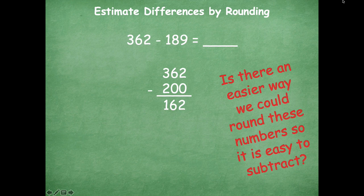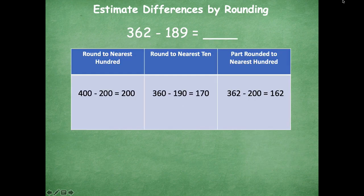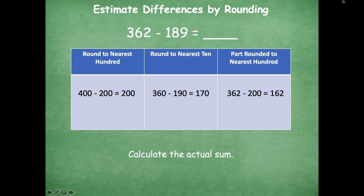Let's compare all of those ways in this chart. When we rounded to the nearest hundred, our difference was 200. When we rounded to the nearest ten, our difference was 170. And when just part of our problem was rounded to the nearest hundred — the number closest to the next hundred — the difference was 162. I want you guys to actually calculate the actual difference. Go ahead and pause the video and solve 362 minus 189, then click play when you're ready.